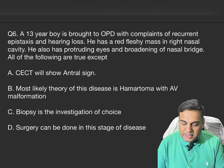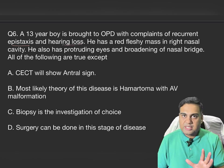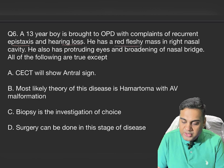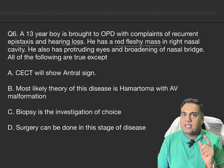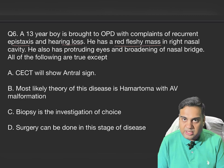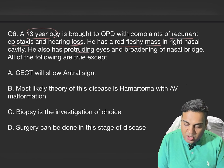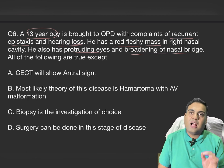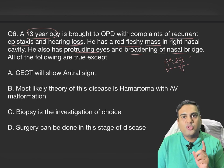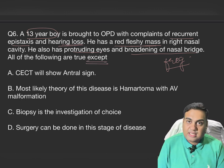Next clinical question: a 13-year-old boy presents with recurrent epistaxis and hearing loss. He has a red fleshy mass in the right nasal cavity, protruding eyes, and broadening of the nasal bridge — this is called frog face. This is classical of juvenile nasopharyngeal angiofibroma. The question asks: all of the following are true EXCEPT — remember, this is a negative question.